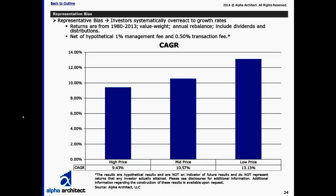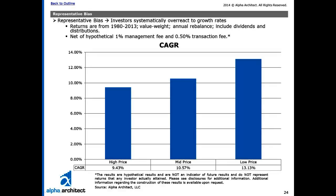Here's our own study. We look at simple tercile sorts — we sort the universe based on EBIT to total enterprise value for mid- and large-cap firms from 1980 to 2013. There is a clear relationship between price paid and future performance. One could argue that value stocks are much riskier than growth stocks and therefore warrant the nearly 4% premium for low-priced stocks versus high-priced stocks. However, one could also argue that much of this premium is more associated with representative bias in the marketplace and investor irrationality.